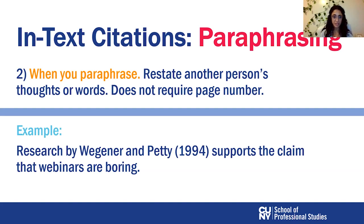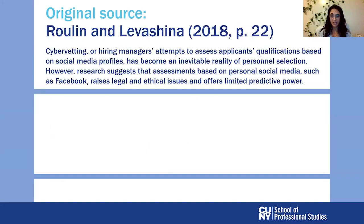Remember the format for paraphrasing is just the author's family names — here there are two — and the year in parentheses, or you can use parenthetical citation where you include all the information inside the parentheses. We will see some of these examples. Paraphrasing is a little bit tricky — you need to tell me what the author said but in your own words, without sounding like you're plagiarizing.